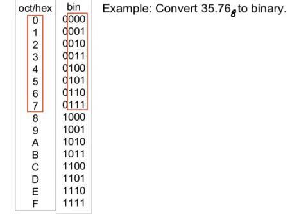Let's do this first example: convert 35.76 base 8 to binary. To do this conversion, I replace each digit within the octal number by its three-digit binary equivalent. So for three, the three-digit binary equivalent is 011, so I write down 011. Five in binary as a three-digit number is 101, so I write down 101. Then I put in my fractional point.